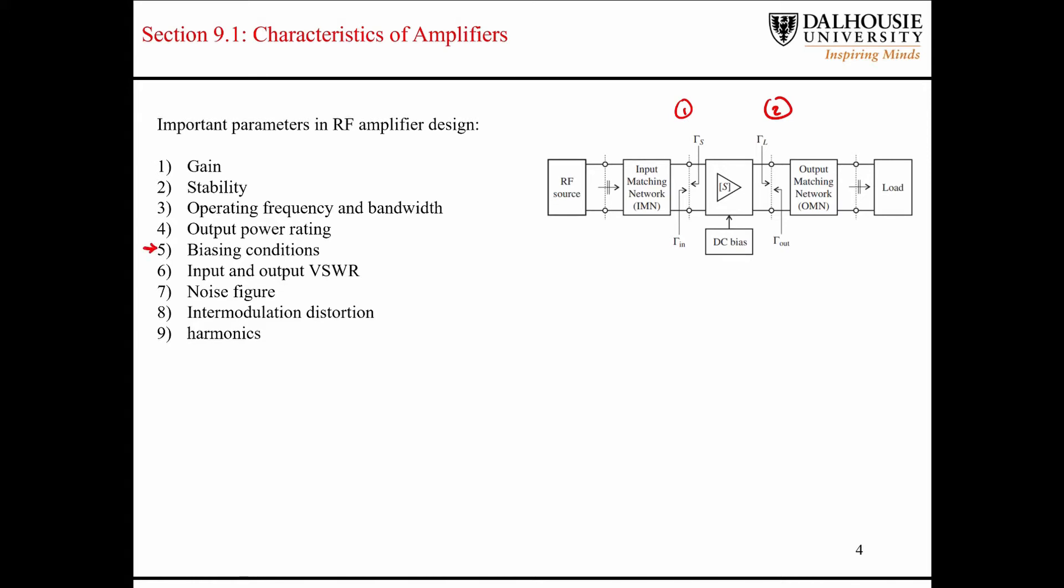Just keep in mind that the approach that we're going to take, I'll talk about this here in a sec, but we're going to be looking at the amplifier block here from the point of view of its S parameters. And you need to keep in mind that those S parameters are provided for certain bias conditions for the transistors that are inside that block. So that's important.